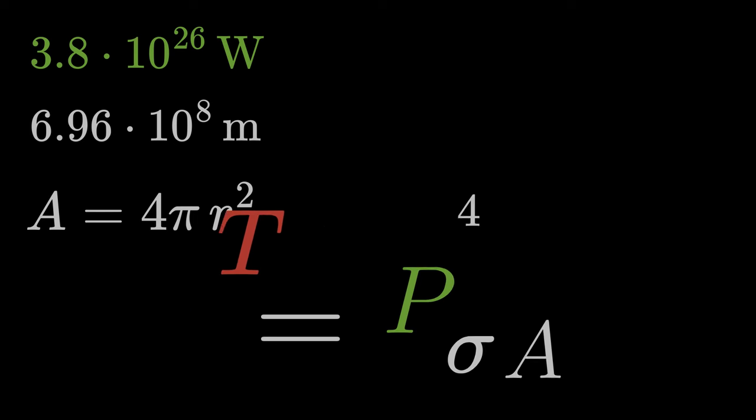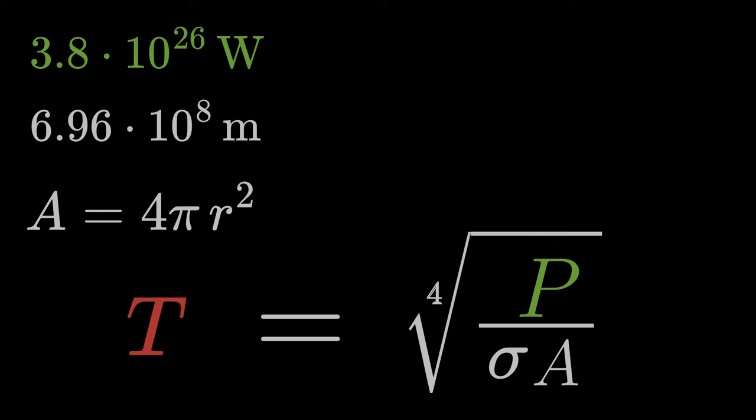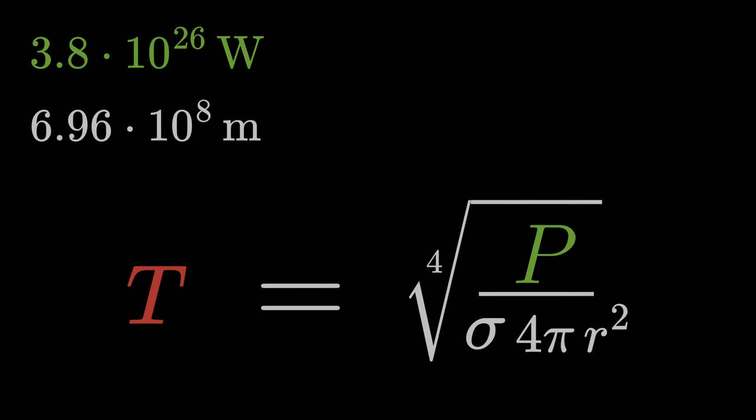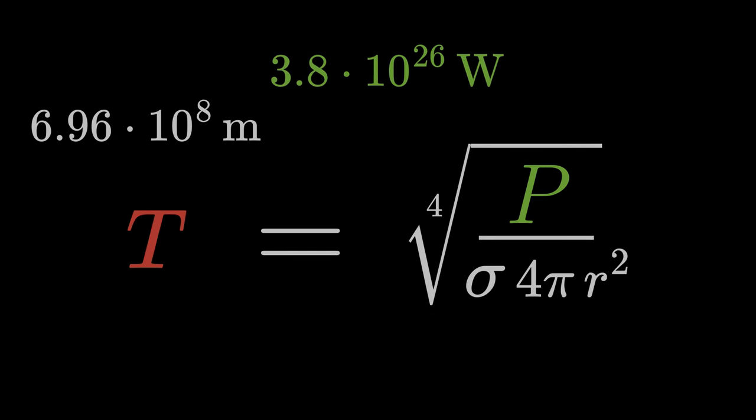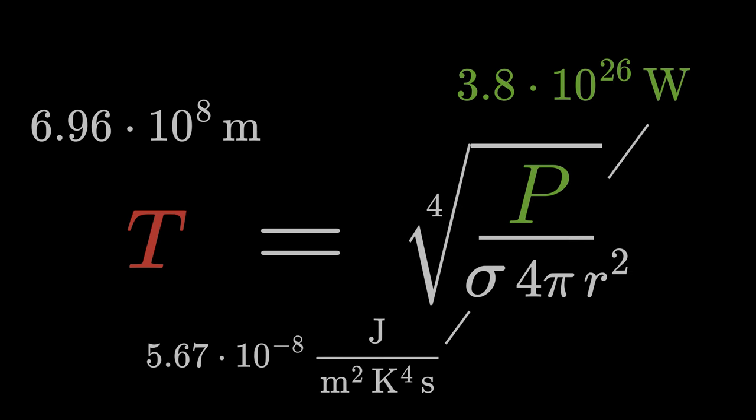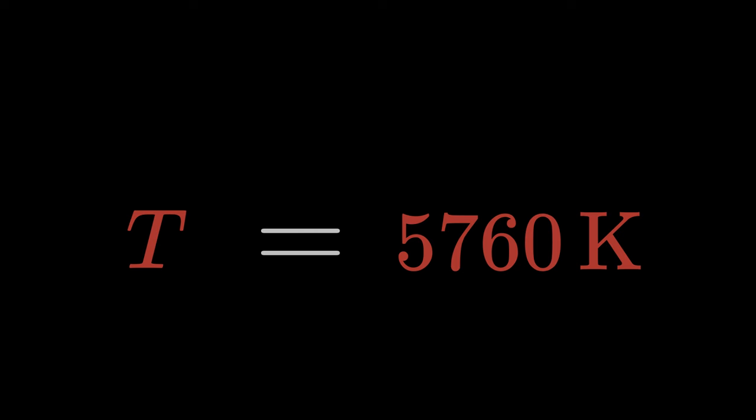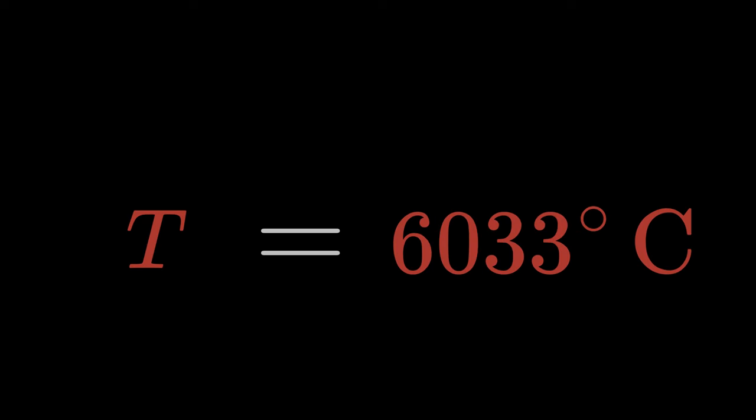Let's rearrange the Stefan-Boltzmann law with respect to the temperature T and insert the surface area formula. If we now insert the radiant power, the Stefan-Boltzmann constant, and the solar radius, we get 5,760 Kelvin as the surface temperature of the sun. This corresponds to 6,033 degrees Celsius.